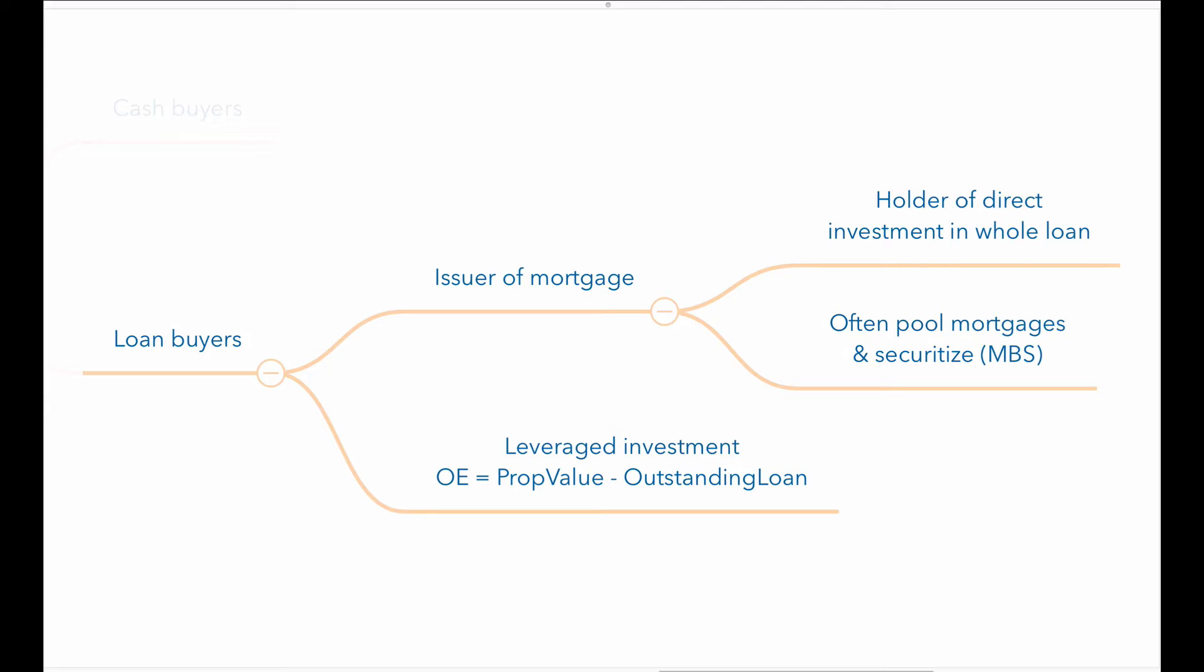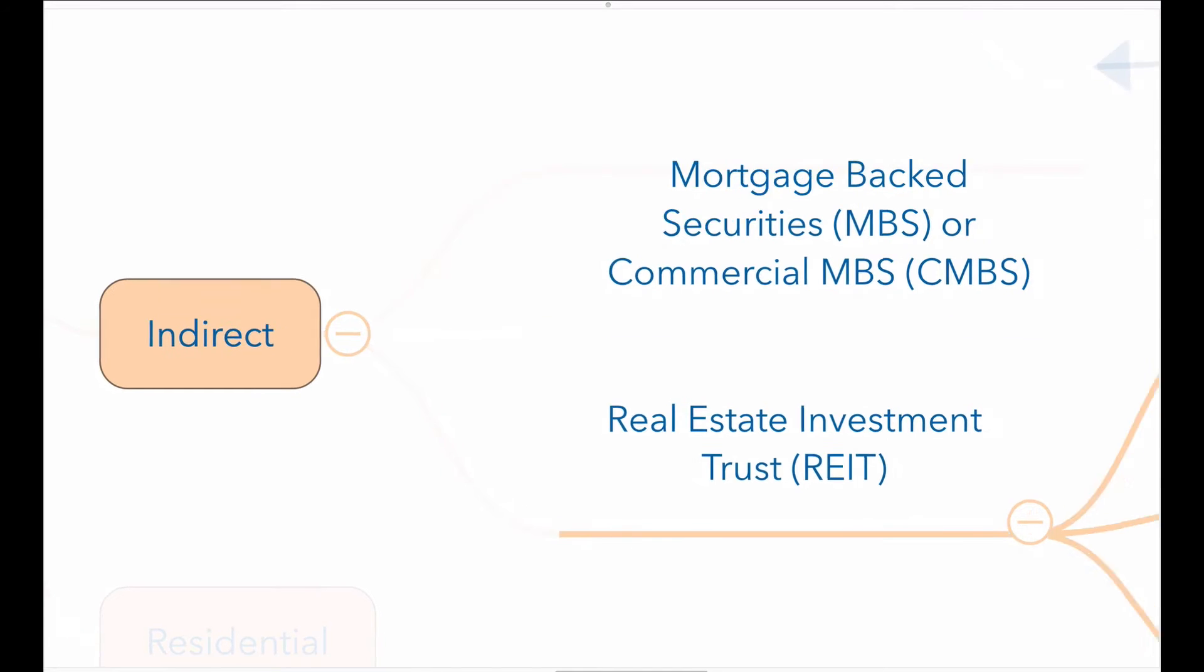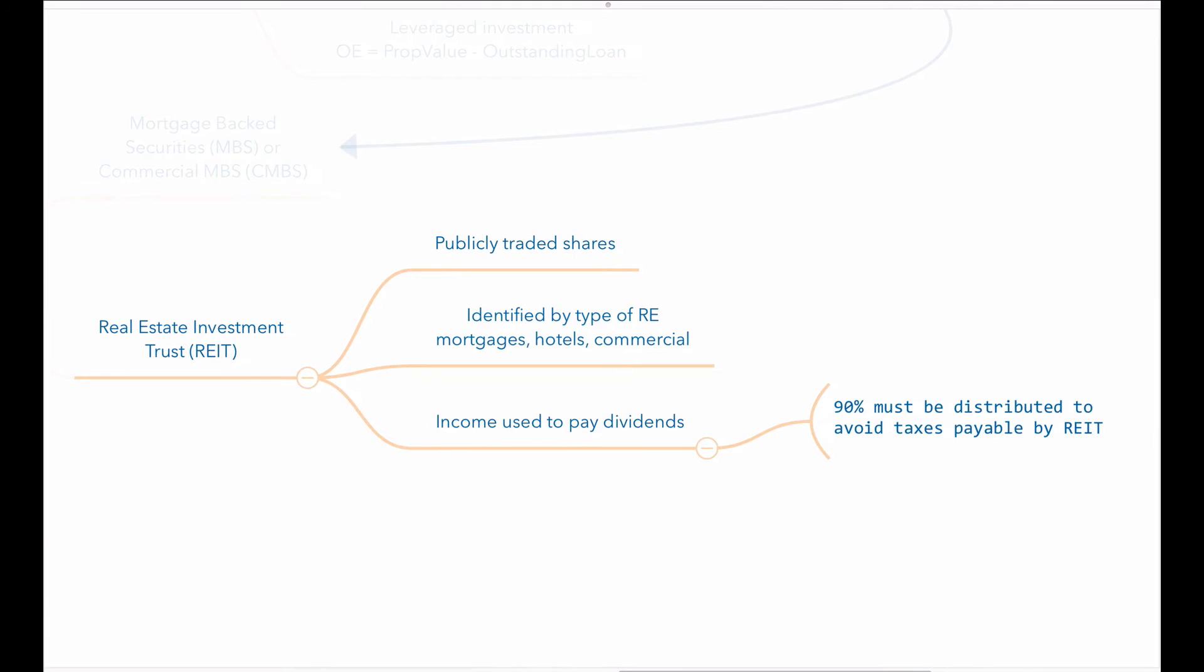Mortgage-backed securities or MBS and commercial mortgage-backed securities or CMBS represent indirect real estate investments. Real estate investment trusts or REITs issue shares that trade publicly, much like the shares of common stock. REITs are identified or differentiated by the type of real estate assets that they hold.